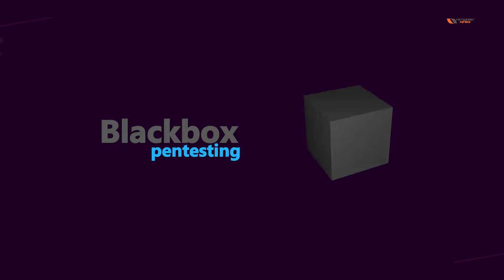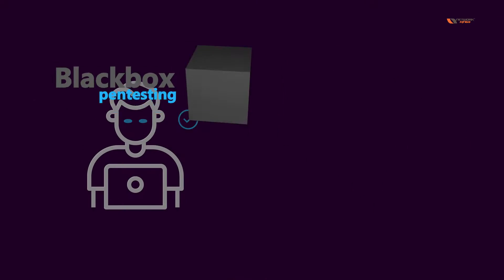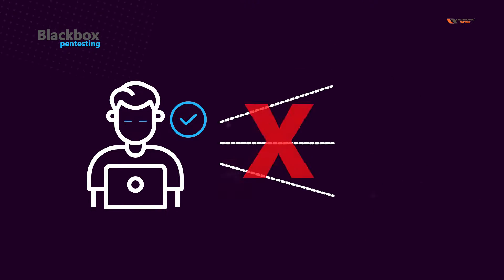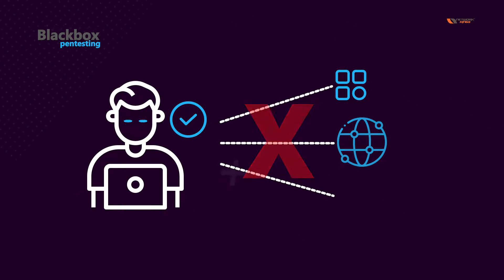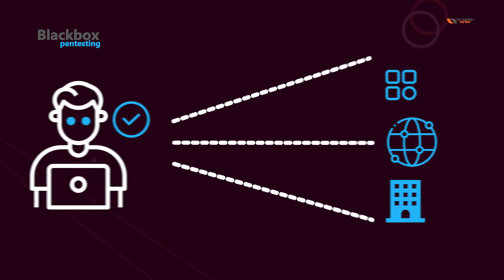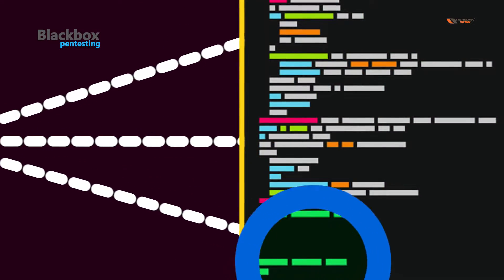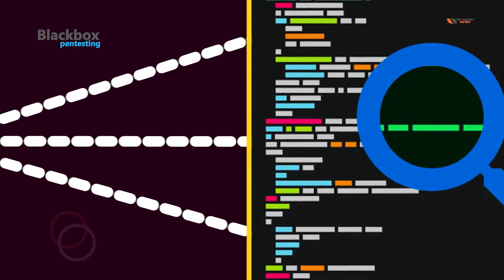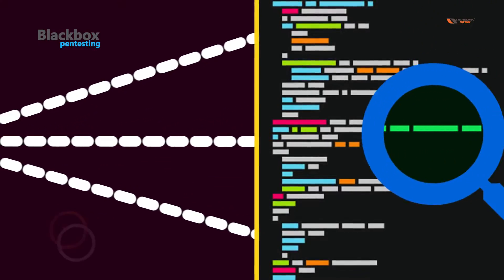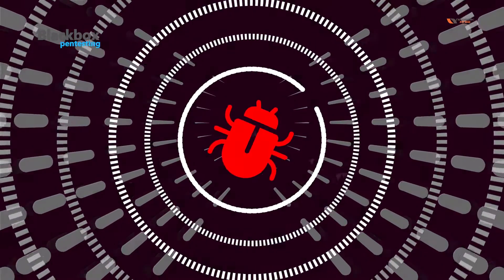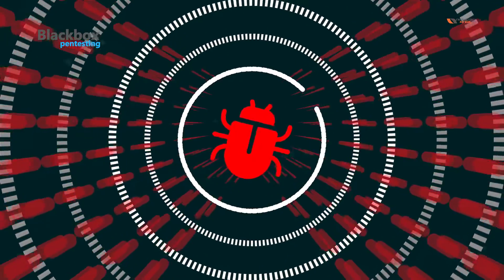Black box pen testing is where you as a pen tester won't get any access to the applications, networks, or their infrastructure beforehand. You will have to go through the different phases of hacking or follow a framework or model to gain access into their infrastructure.